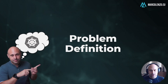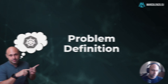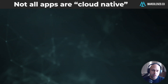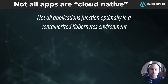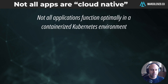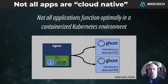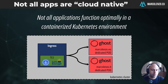Let's start with defining the problem we're trying to solve. The issue is that not all applications are cloud native — it means that not all applications function optimally in a containerized environment. And I faced this problem in the last months with Ghost, which is an open source blog and newsletter platform that I use for my personal websites.